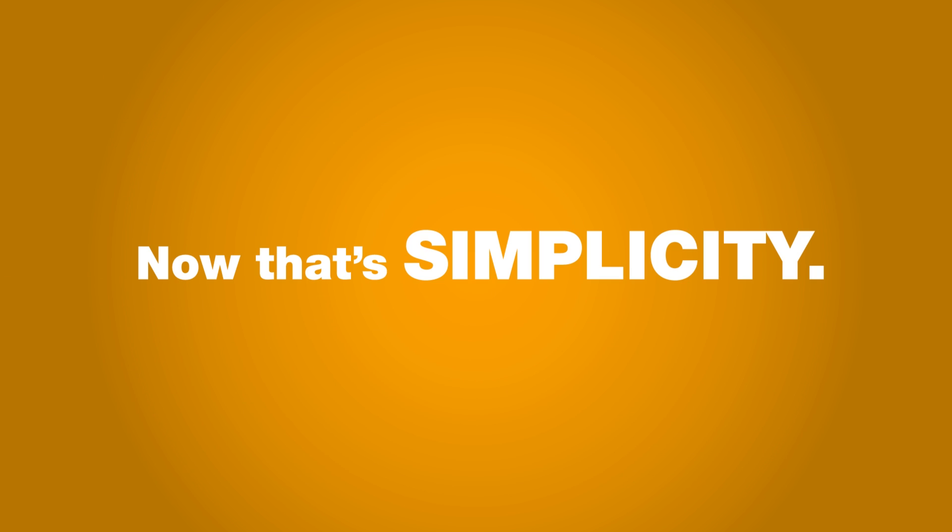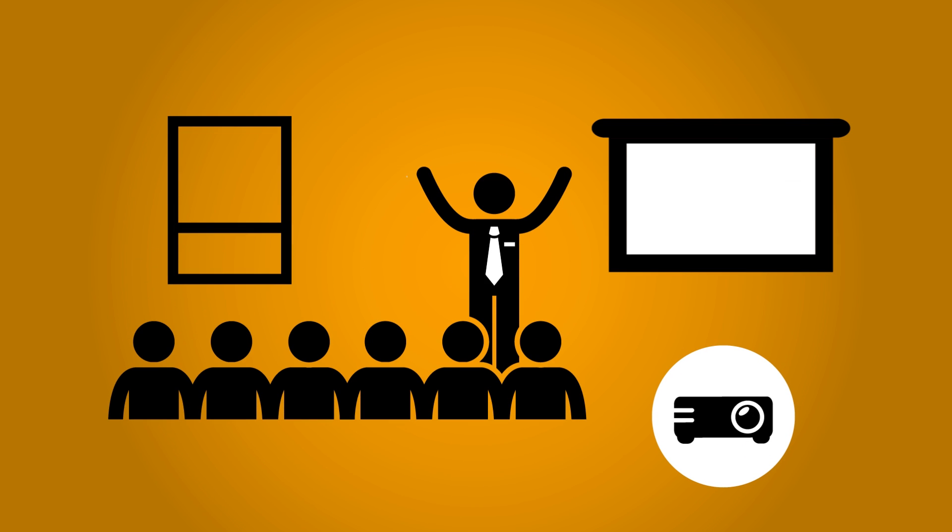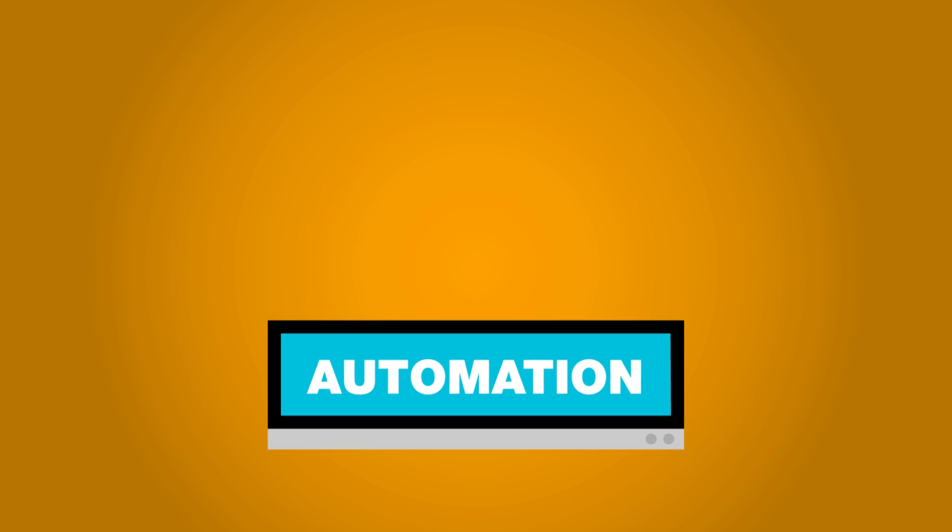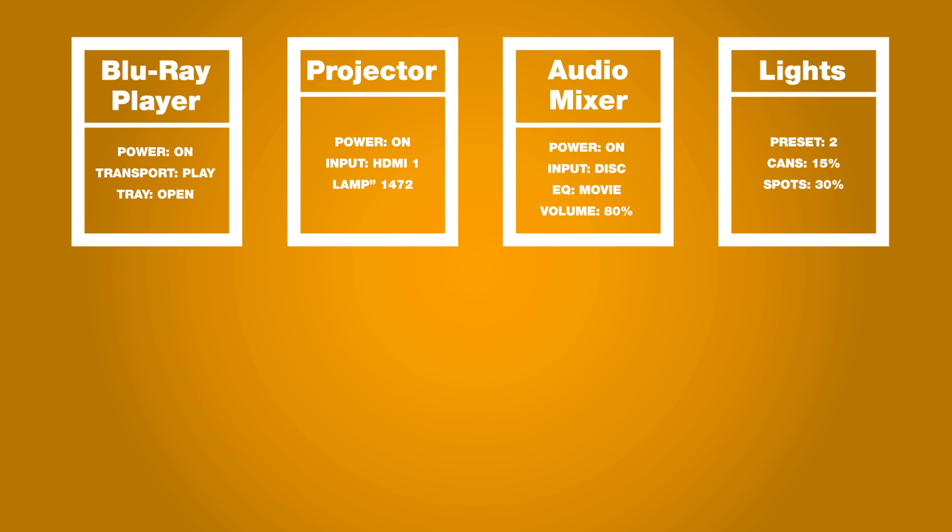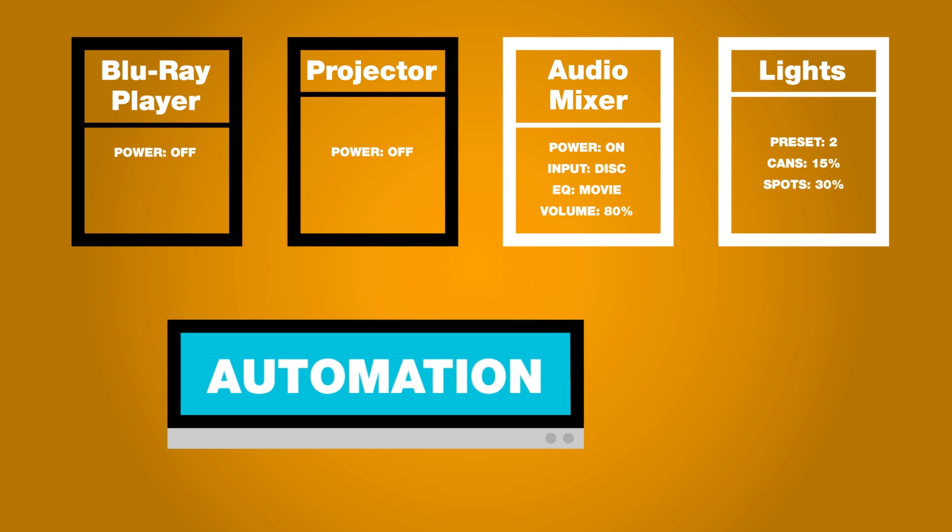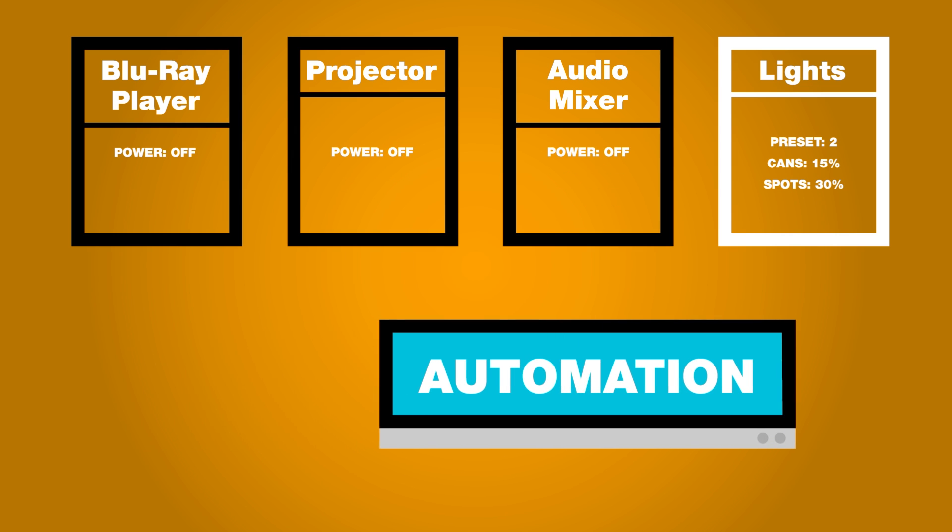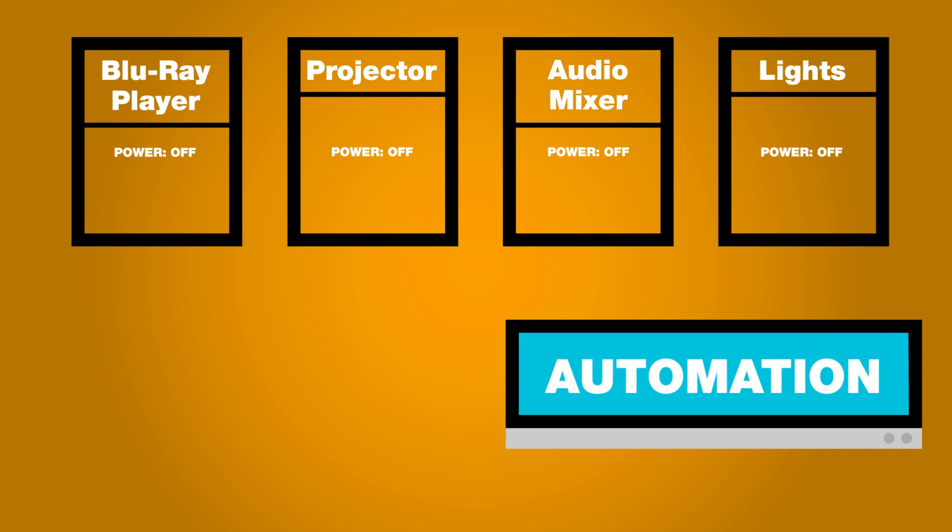Now that's simplicity. But what about when you're done with the meeting? When you leave the room, you forget about the technology that's in there. But your automated system doesn't. What if you left the lights or projector on? An automated system can monitor room usage, determine that you're gone and won't be back for a while, and turns everything off until you're ready to use it again.